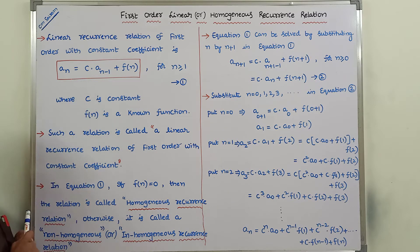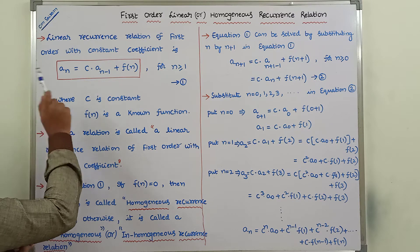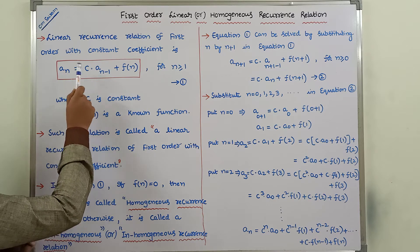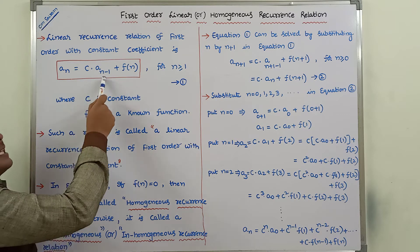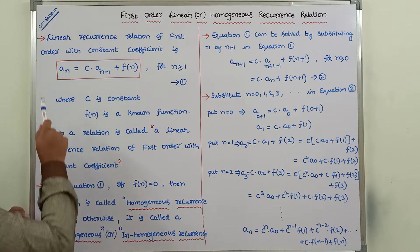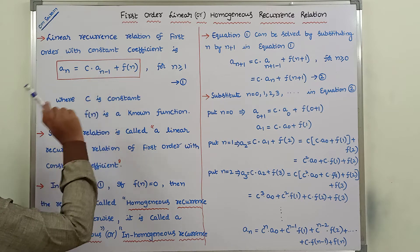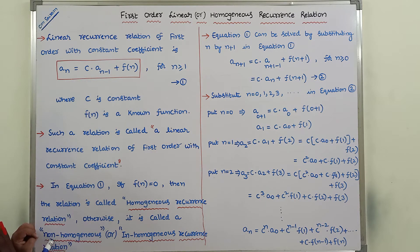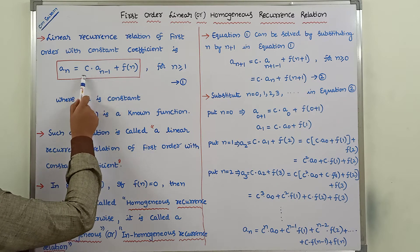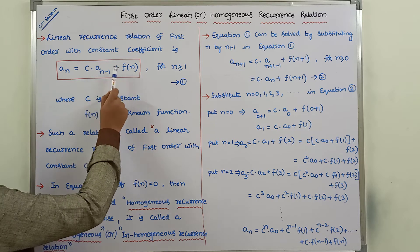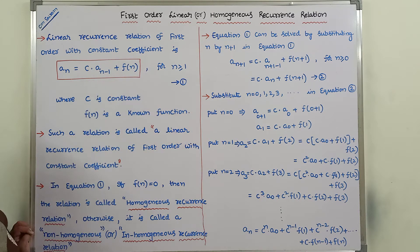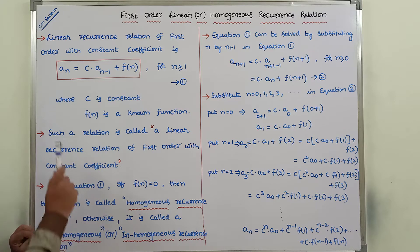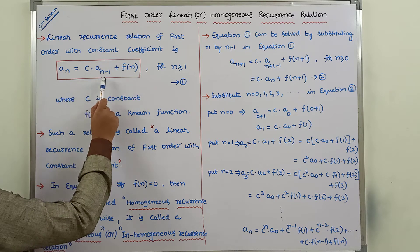How can we say this is a first-order linear recurrence relation? In that recurrence relation, the nth term is defined in terms of its immediate predecessor, the (n−1)th term. The (n−1)th term is multiplied by some constant c, plus f(n). Since f(n) is a known function and c is a constant, this type of relation is called a linear recurrence relation of first order with constant coefficient.